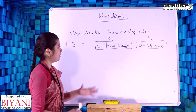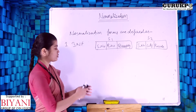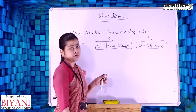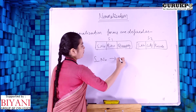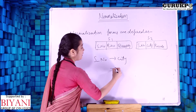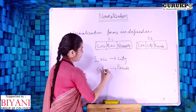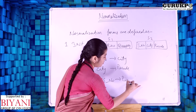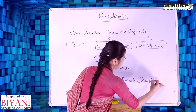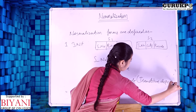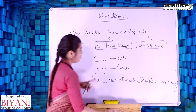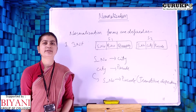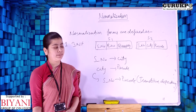Let's check whether there is a transitive functional dependency. In table S1 there is no transitive functional dependency, but in S2 there is. City depends on serial number, and pin code depends on city. So indirectly, serial number has a dependency on pin code — this is a transitive functional dependency, and in Third NF we must remove it.